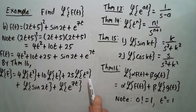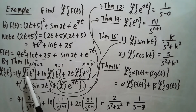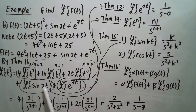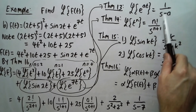In the first line we apply Theorem 14 to each power of t: n equals 2 for t squared, n equals 1 for t, and n equals 0 for t to the 0. For the sine of 2t we apply Theorem 15, and for the exponential e to the 7t we apply Theorem 13. Applying Theorem 14 gives 2 factorial over s cubed, 1 factorial over s squared, and 0 factorial over s. Applying Theorem 15 with k equal to 2 gives 2 over s squared plus 4. Applying Theorem 13 with a equal to 7 gives 1 over s minus 7.